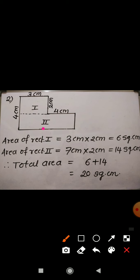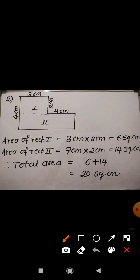In the second rectangle, this side is given which is 4 cm, and this is 3. Hence the opposite of this side is again 3, so this will be 3. And 3 plus 4 it will become 7 cm, so length of the second rectangle will be 7 cm. Now this complete side is 4 cm and this one is 2, so remaining will be 2 cm. Means for the second rectangle, the length will be 7 cm and breadth will be 2 cm. So length into breadth, that is 7 cm into 2 cm, it will be 14 square cm.